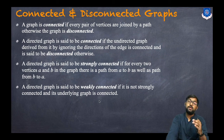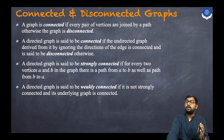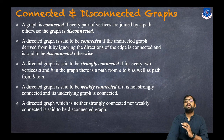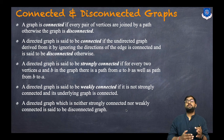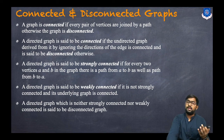A directed graph is said to be weakly connected if it is not strongly connected but its underlying graph is connected. So when a directed graph is not strongly connected and its underlying graph is connected, it is called a weakly connected graph. A directed graph which is neither strongly connected nor weakly connected is called a disconnected graph.